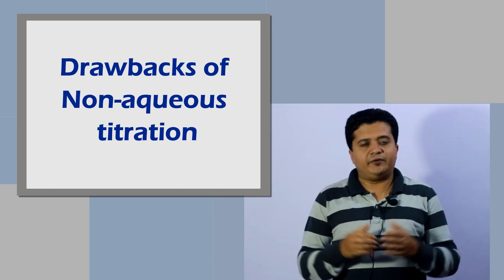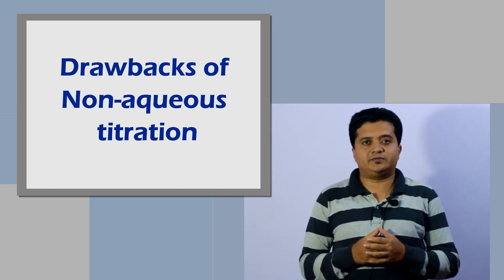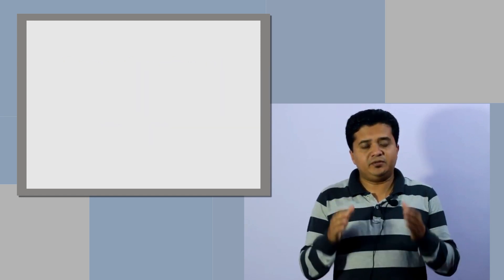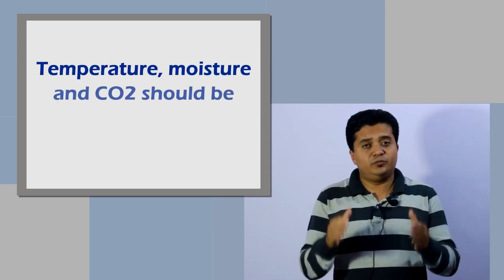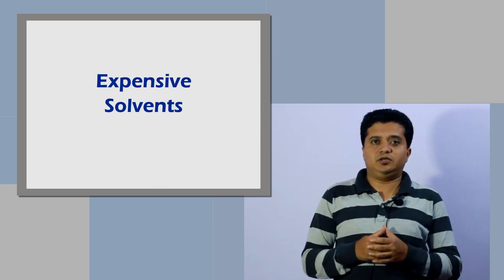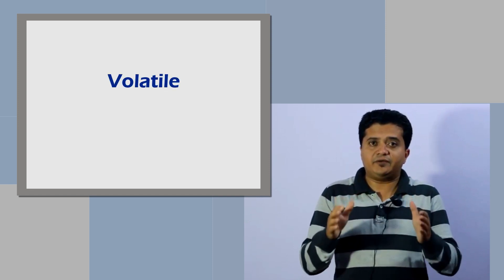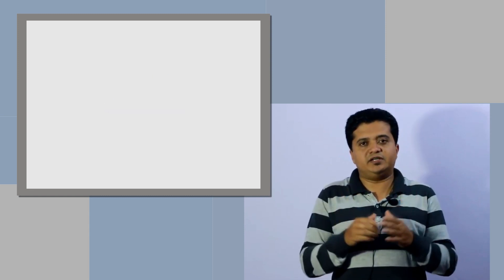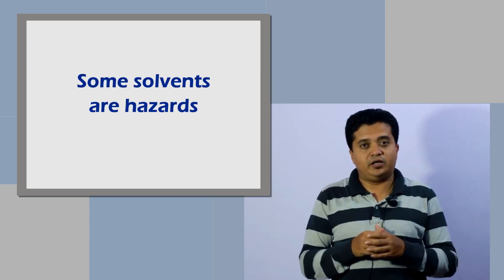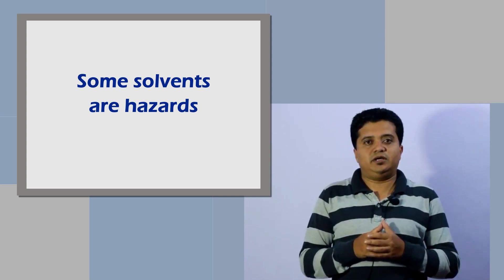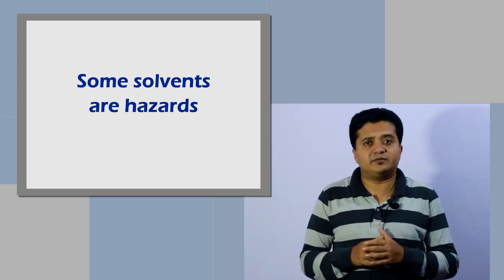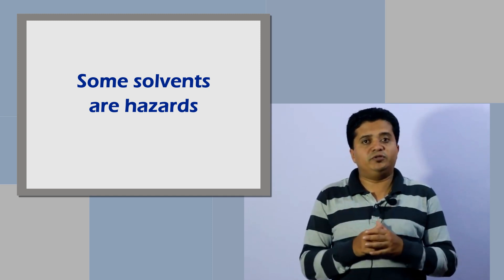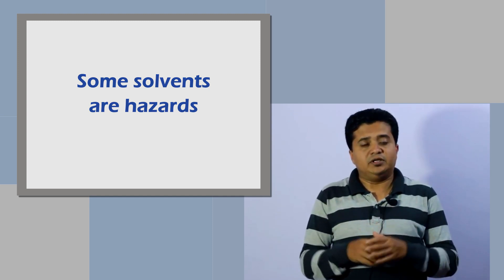Non-aqueous titrations also have some drawbacks. Temperature, moisture, and carbon dioxide content should be controlled properly. Solvents used in non-aqueous titrations are expensive. Some solvents are volatile, and some are hazardous if mishandled — for example, ammonia can be fatal. It is not an environment-friendly method, as solvents may pollute the environment. These are all the drawbacks of non-aqueous acid-base titrations.